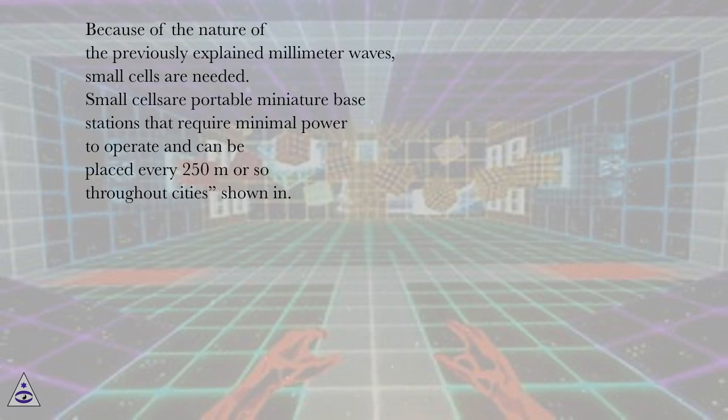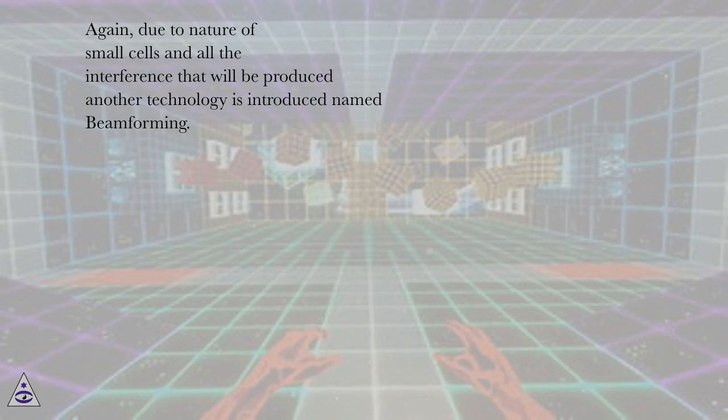Because of the nature of the previously explained millimeter waves, small cells are needed. Small cells are portable miniature base stations that require minimal power to operate and can be placed every 250 meters or so throughout cities. Due to nature of small cells and all the interference that will be produced, another technology is introduced named beamforming.